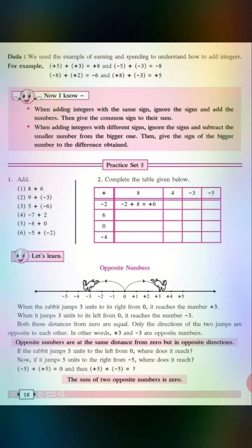So now we can say that opposite numbers are at the same distance from 0 but in opposite directions. Now, if the rabbit jumps 5 units to the left from 0, where does it reach? Yes, minus 5.